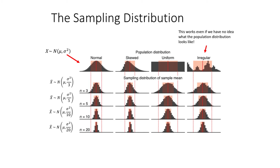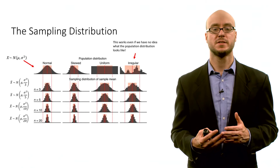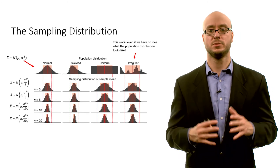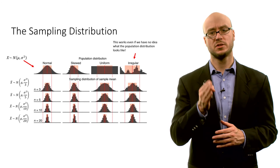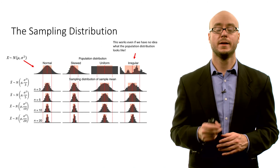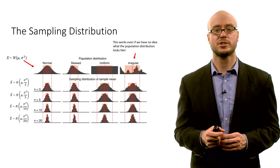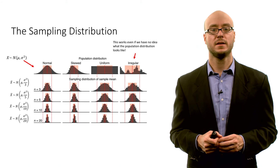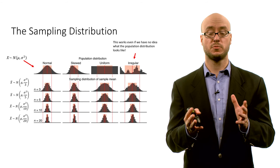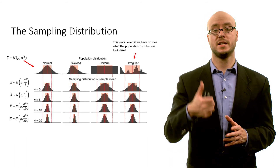Here we have four different distributions in the population, and the distributions below show the corresponding sampling distributions. For each of these sampling distributions, they're roughly symmetric and mound-shaped. When the sample size is pretty small there's greater spread and some skewness, but as we get closer to a sample size of 30, the distributions are all pretty normal — mound-shaped and roughly centered on the population mean mu. For each of these, as we increase sample size, the spread gets smaller. This is why pollsters and survey companies often try to get a sample size of roughly 500 to 1,000 — because that standard error of the sample mean will be pretty small, tightly bound around the population mean mu.